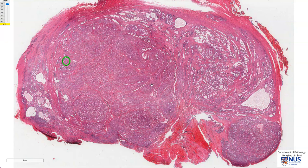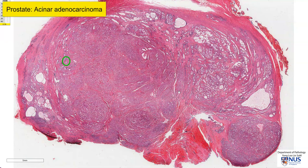This is a virtual microscopy slide of a case of prostatic adenocarcinoma, and the type of adenocarcinoma here is the commonest type, which is acinar adenocarcinoma.